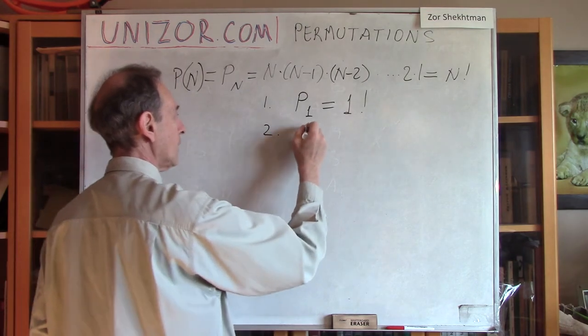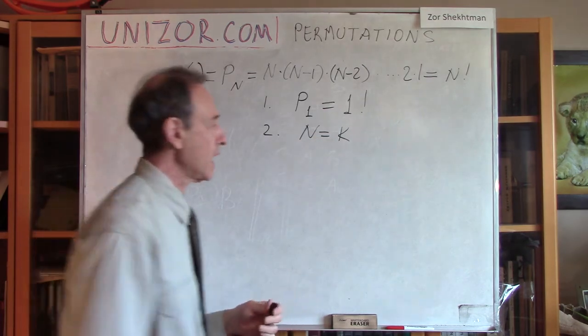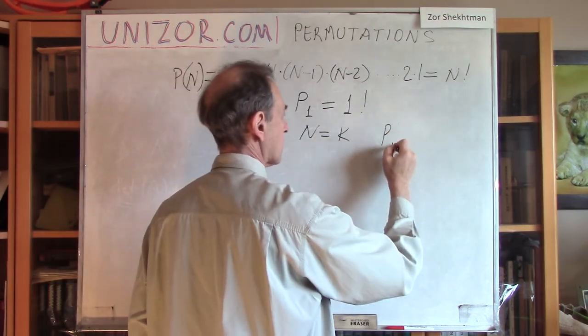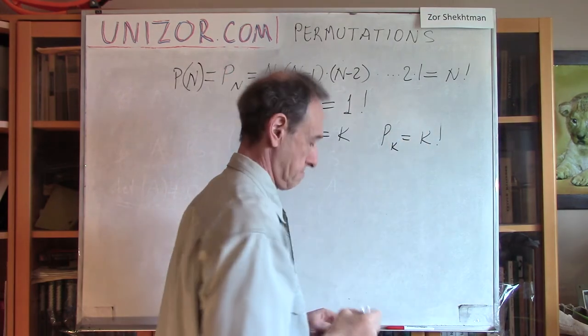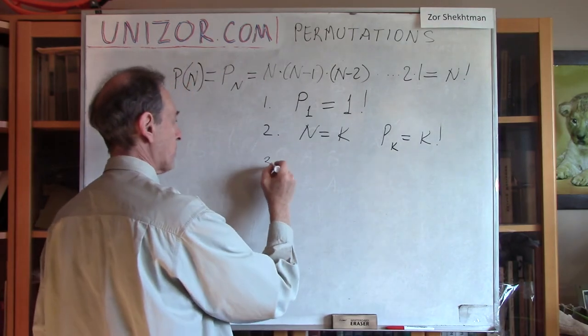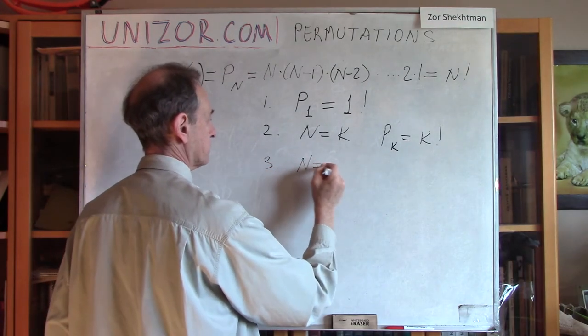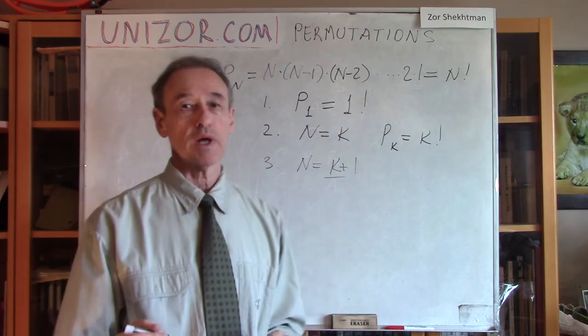Second, let's assume that for some N equal to K, the formula is correct. Now, let's check what happens for the next.